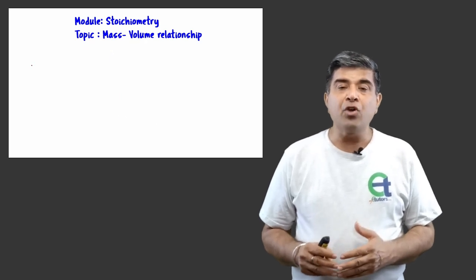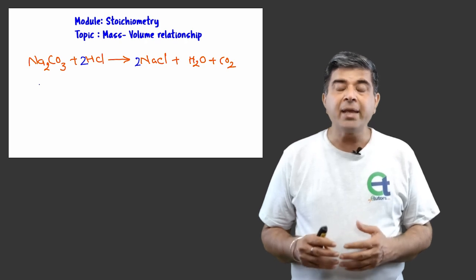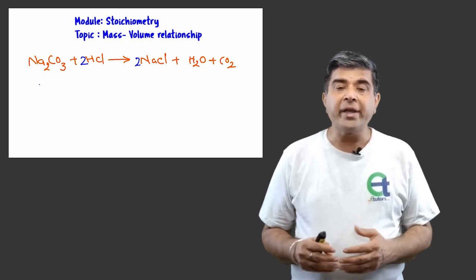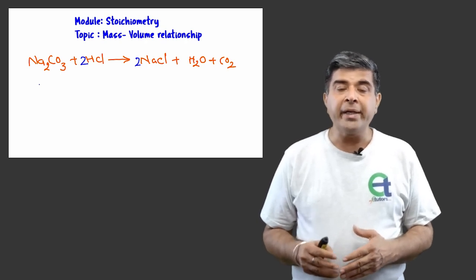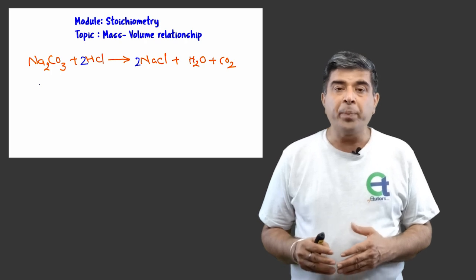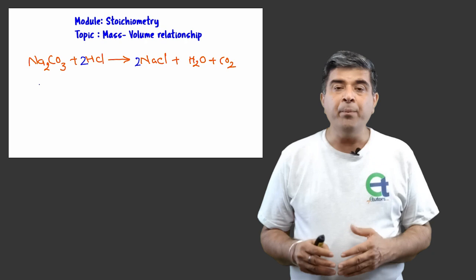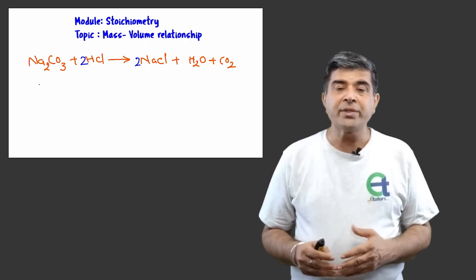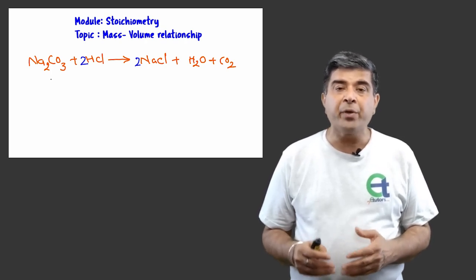Eventually the balanced chemical equation for the reaction would be 1 mole of sodium carbonate reacts with 2 moles of hydrochloric acid to produce 2 moles of sodium chloride, 1 mole of carbon dioxide, and 1 mole of water.